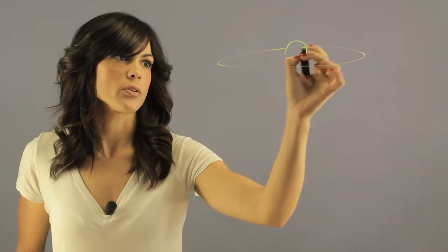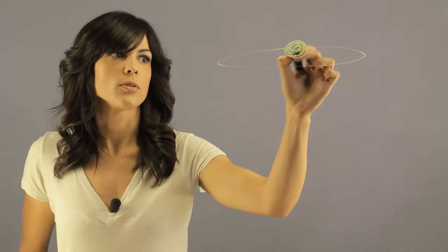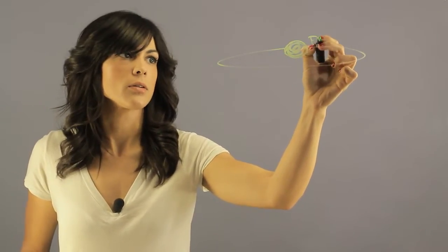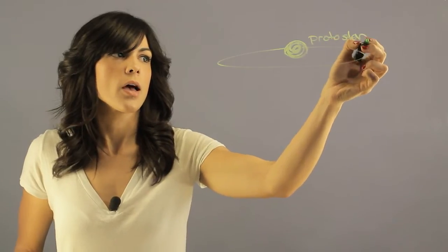When you had the spinning cloud of gas and dust, this is 4.5 billion years ago, when you had a protostar, so you're just forming a star.